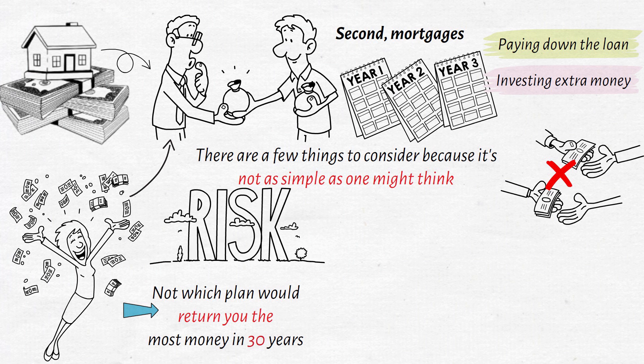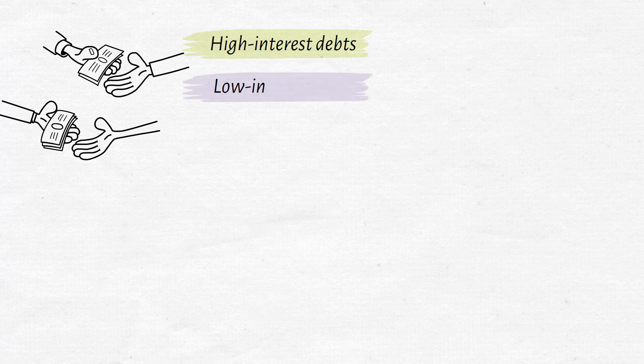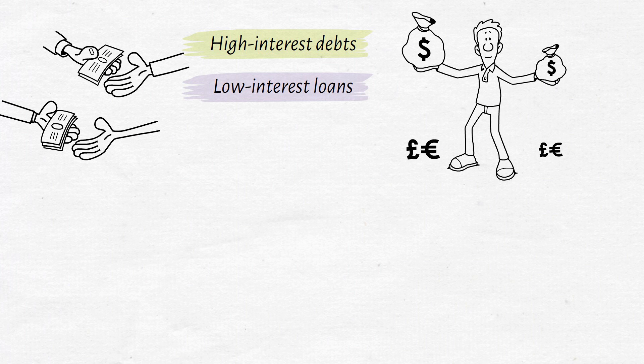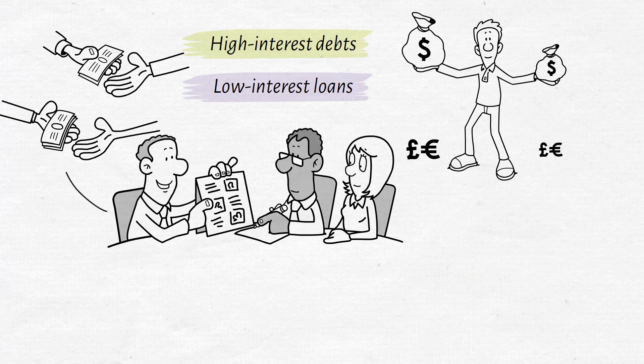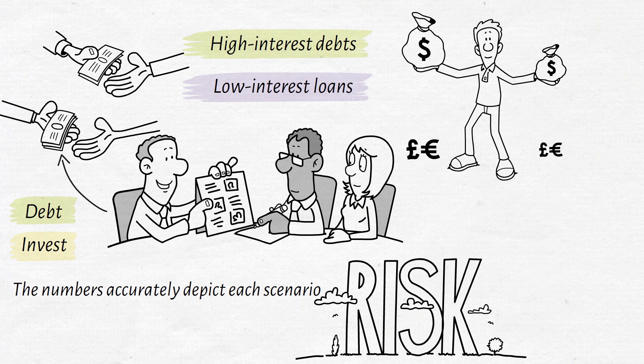Risk is also an important factor to consider when selecting an approach, and it is critical to understand this before deciding on one. In general, paying off high-interest debts and replacing them with low-interest loans will yield the maximum profit in the long run. People have strong opinions about using extra income to gradually pay down debt and invest at the same time. The numbers accurately depict each scenario, and it's your job to assess the risk and reward in order to decide what's best for you.